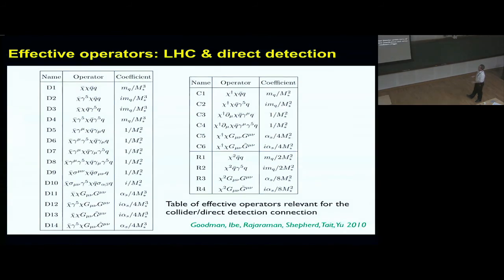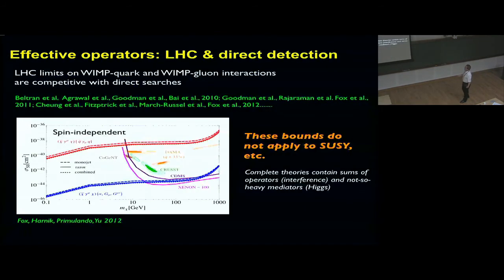Here are early calculations in 2010, effective operators that are relevant for both LHC and direct detection. You just have a table and you can analyze one of these at a time. For example, here's a coupling of spin-1/2 dark matter with gluons. Accelerator bounds are very good at low masses because at accelerator energy, a mass of 10 GeV or 1 GeV is just massless, so these bounds extend to low masses, no problem. They stop at large masses when this is beyond the kinematic limit of the accelerator.